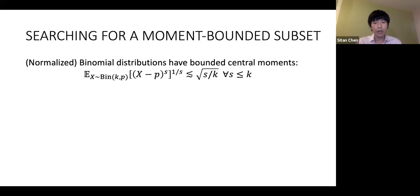What do I mean by moment bounds? For the domain size equals 2 case, this is straightforward. It's well known that binomial distributions have sub-gaussian moments up to a certain degree.